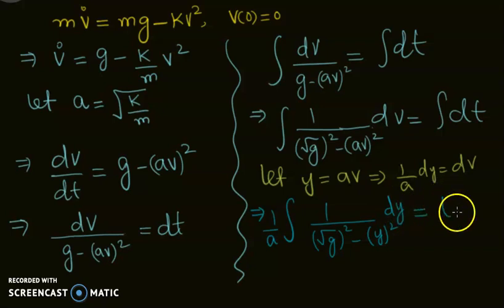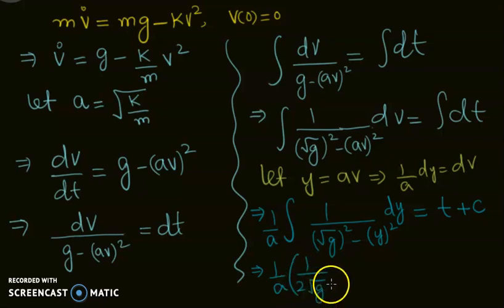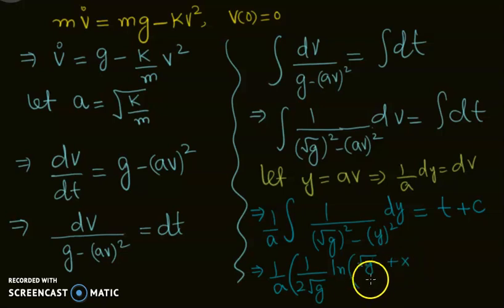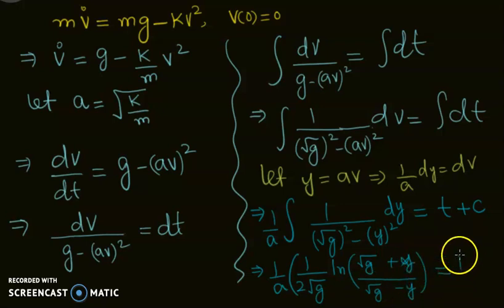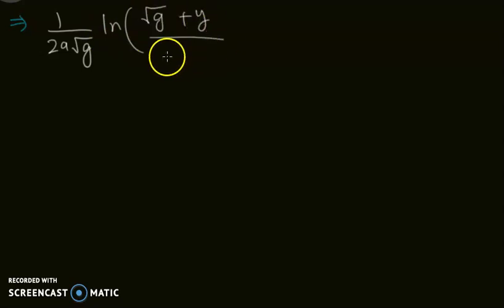This equals t + c. After integrating using the suitable formula, we get (1/a) · (1/(2√g)) · ln|(√g + y)/(√g - y)| = t + c. Since y = av, we replace that value and get (1/(2a√g)) · ln|(√g + av)/(√g - av)| = t + c.